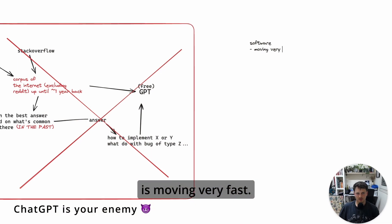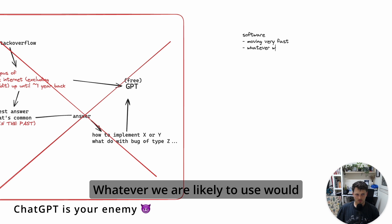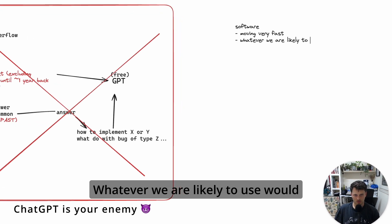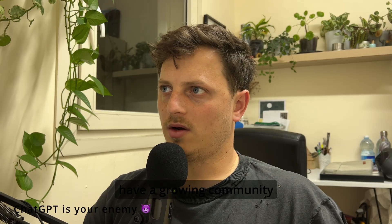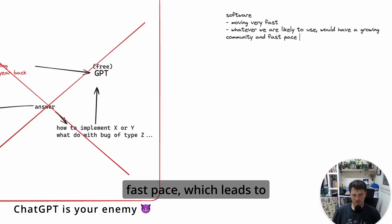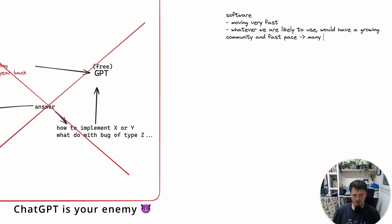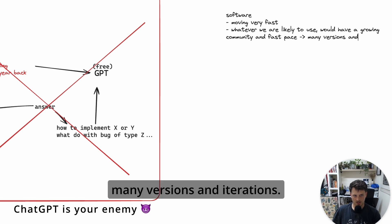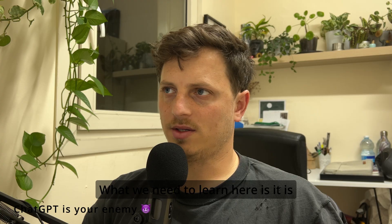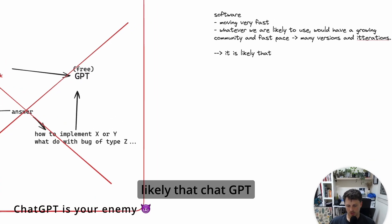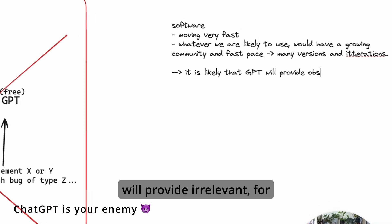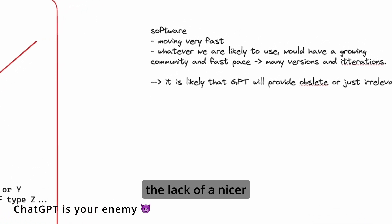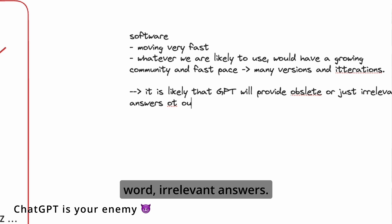Software is eating the world, but it's also moving very fast. Whatever we're likely to use will have a growing community and a fast pace, leading to many versions and iterations. What we need to understand is that ChatGPT will likely provide irrelevant answers as a result.